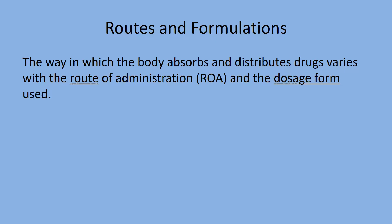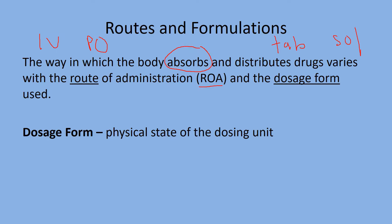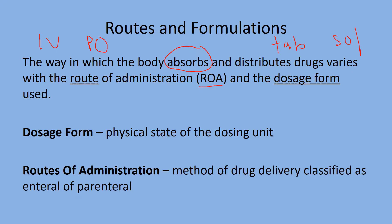Routes of administration, ROAs, and dosage forms. We can pick the route of administration and the dosage form to determine the absorption. For example, which route is faster, IV or PO? Or which dosage form is quicker, a tablet or a solution? The dosage form is how the drug physically comes; route of administration is how it enters the body. They'll classify it as enteral or parenteral. Enter means intestines; para means next to the intestines.